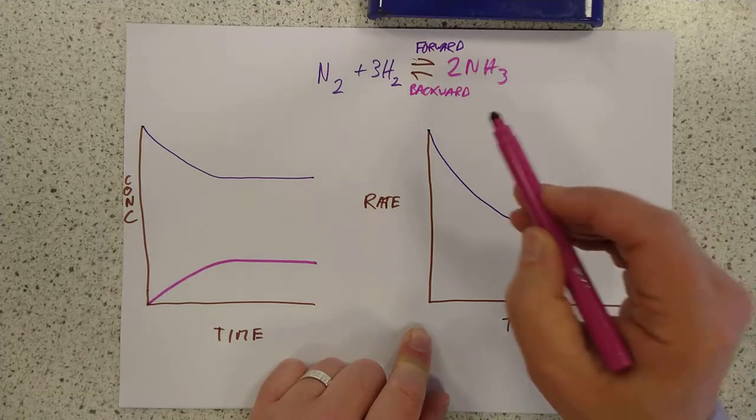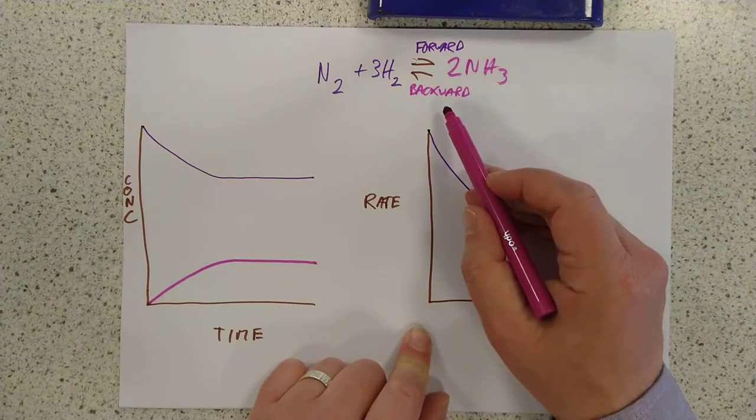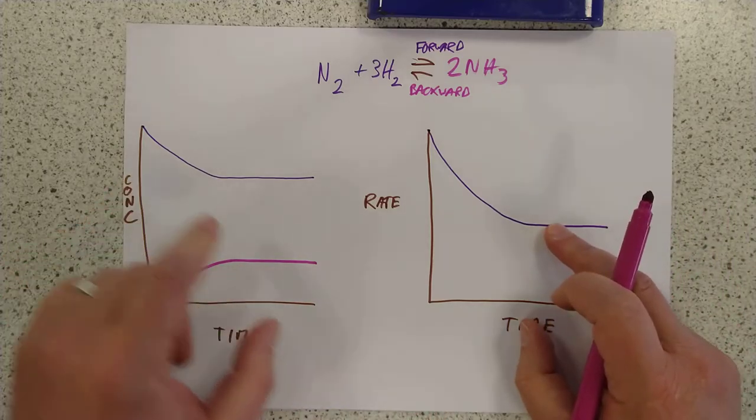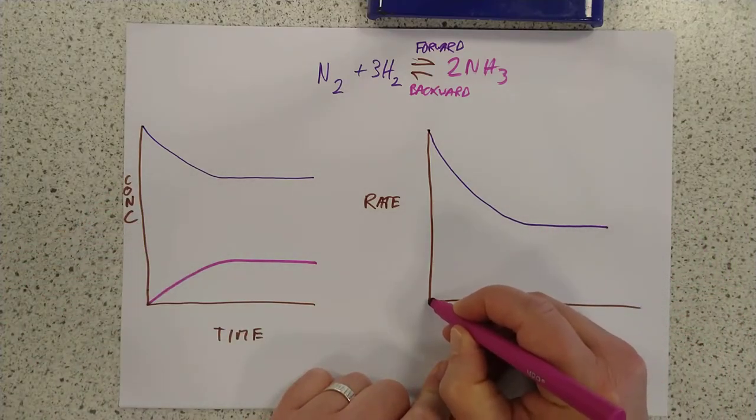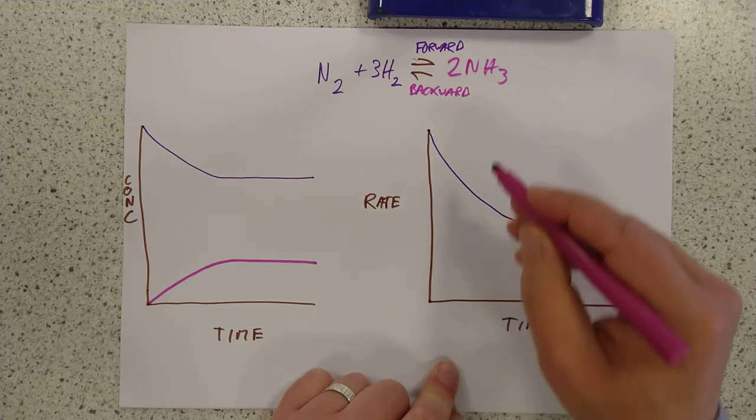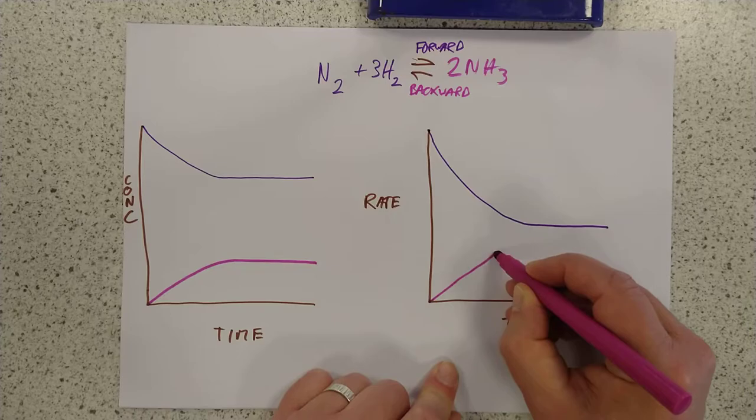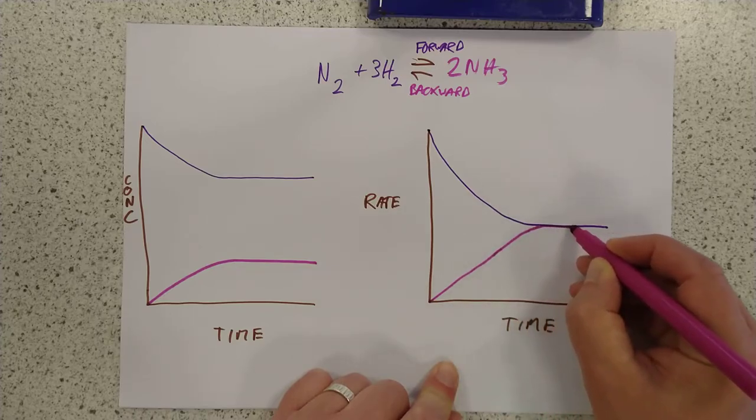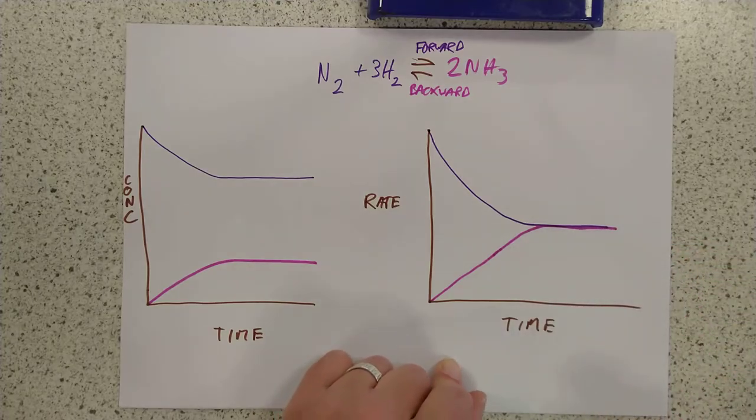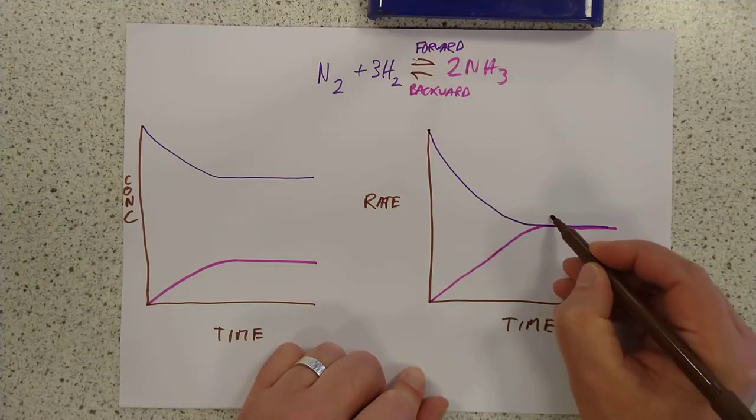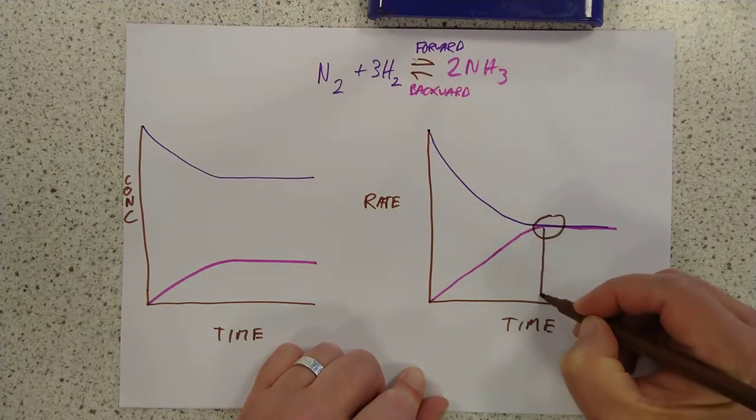And I'm hoping you can maybe jump in and figure out what the backward one is going to look like. Only there is something special about the backwards and forward rates that doesn't happen here. So, the backward rate is going to start at zero, because there isn't any ammonia. And it's going to rise up, and it's going to, that's supposed to be a curve, I do apologize. So, that's where the backward ends up.